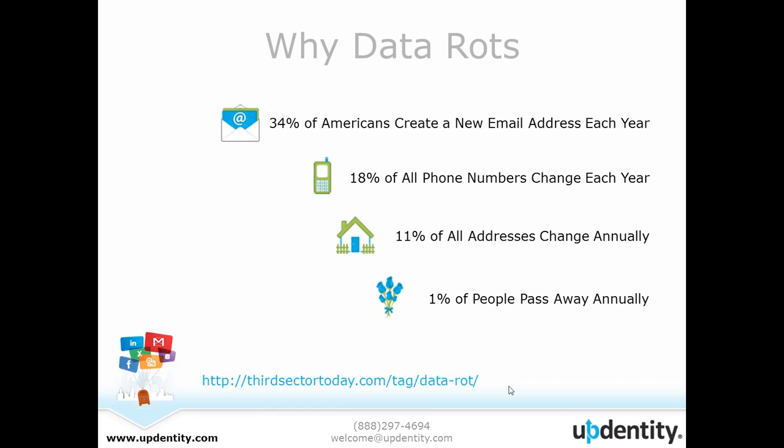This overview contains some percentages of the annual amounts that data goes out of date, and these can be really startling because you really don't think about how frequently this information goes out of date. People continue to move, they accept new jobs, they change their methods of communication — all these things can cause your database to go out of date. You can see here that 34% of Americans create a new email address each year. People may have used an email address provided by their college, opted for a free email address, or used one provided by their ISP and then switched. Sometimes an email address just goes out of date because it gets flooded with spam. So it happens a lot — 34% of Americans create new ones each year.